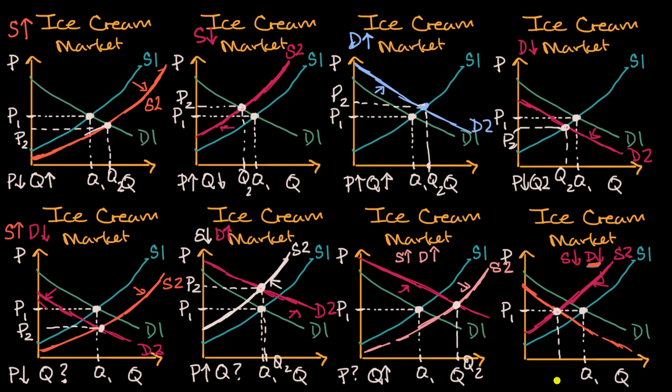My equilibrium quantity, Q2, has clearly gone down. That makes sense. They're supplying less and people want it less. So quantity clearly went down. Quantity goes down. But price, once again, is ambiguous depending on how I draw it. I could make it look like it stays the same. I could make it go up. I could make it go down. It would depend on the particulars of those curves to actually determine what would happen to price in that situation.